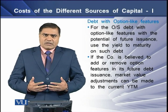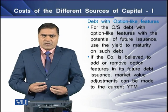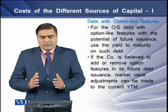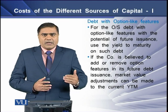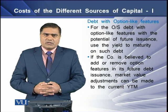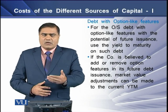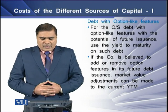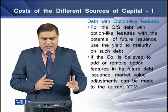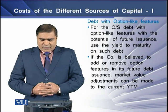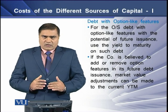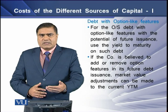Another issue arises when the debt instrument has option-like features. For outstanding debt with option-like features where there is potential for future issuance, it is better to use yield to maturity to determine the cost of debt. If the company is expected to add or remove any option feature in the future, it is better to apply a market value adjustment to the current YTM of the company's existing debt.